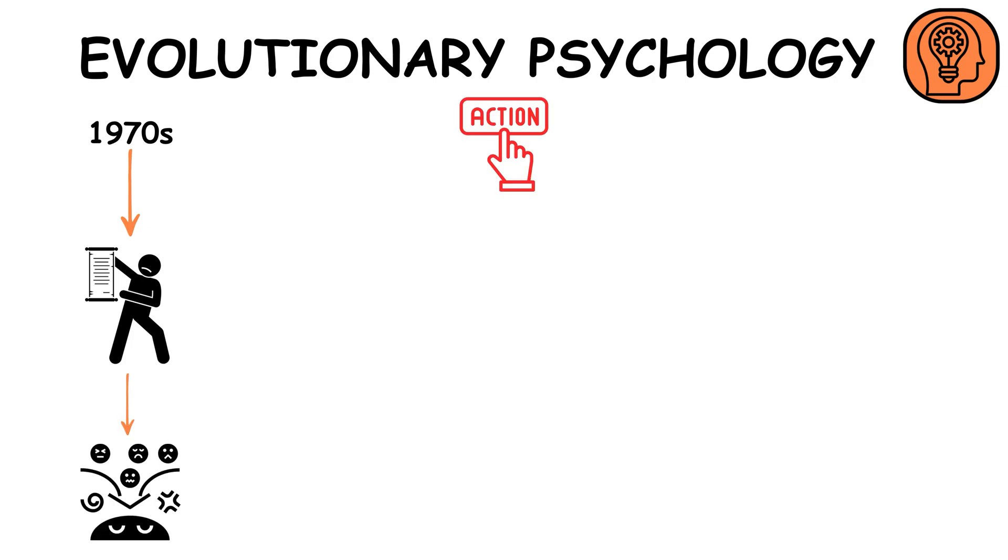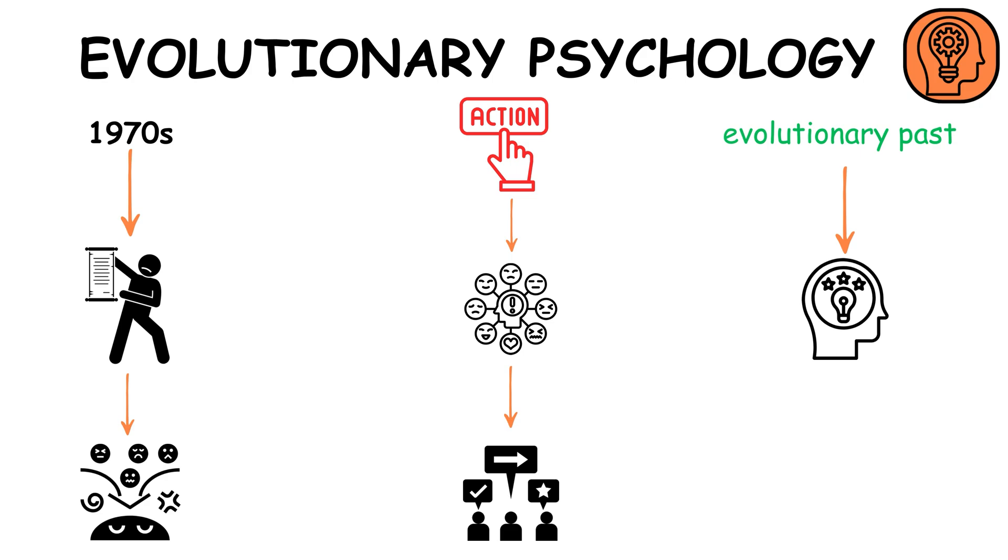Evolutionary psychology, gaining traction in the 1970s, looks at how evolutionary principles explain human behavior. It suggests our actions, emotions, and even social norms are influenced by evolutionary past, aiming to understand psychological traits as adaptations for survival and reproduction.